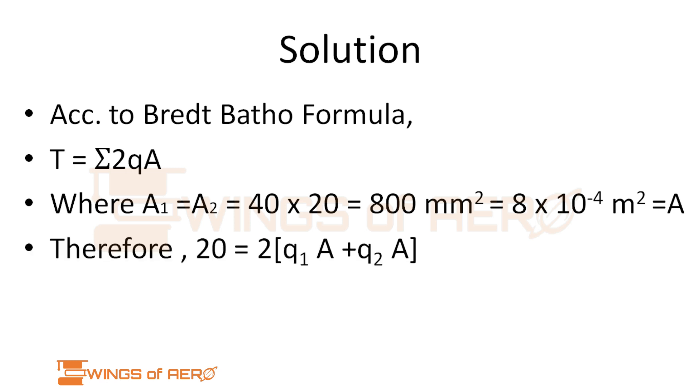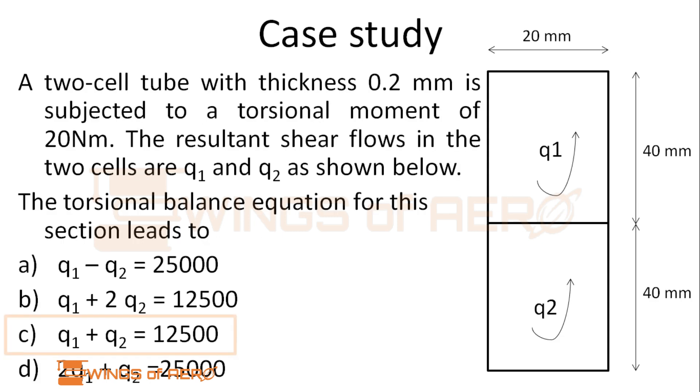Now, therefore, substituting in the above equation, 20 that is given equals 2q1a1 plus q2a2. Here a1 and a2 is same, so we have written 2 open bracket q1a plus q2a. Applying the value we get as q1 plus q2 equals 12500 Nm. Our right answer is option C.